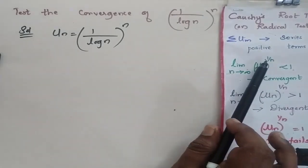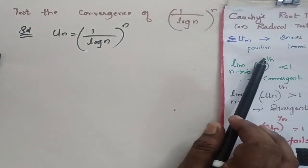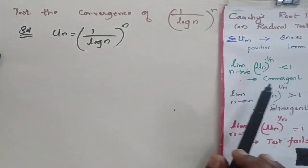You are going to find u_n to the power 1 by n and its limit n tending to infinity of u_n to the power 1 by n. When it is less than 1, it is convergent.